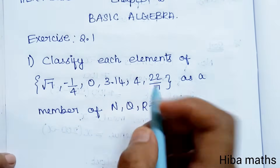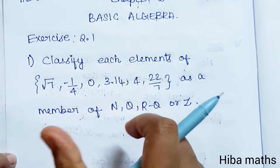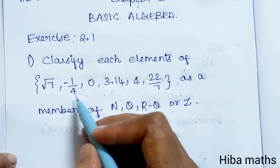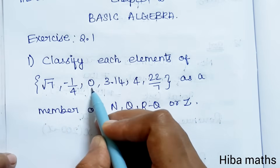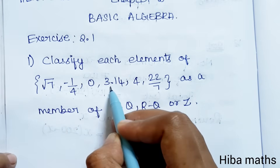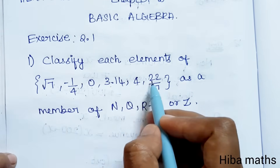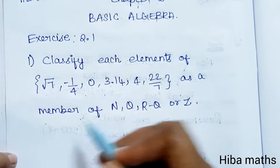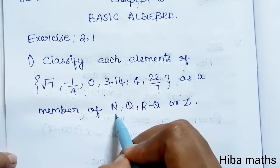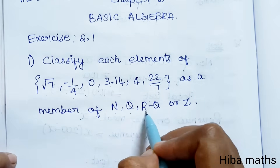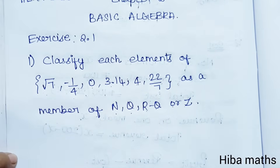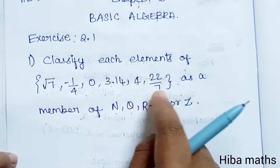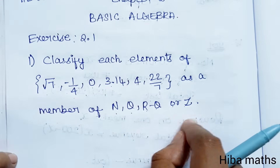Classify each element of: root 7, minus 1 by 4, 0, 3.14, 4, and 22 by 7 as a member of N, Q, R minus Q, or Z. Now we have to identify which category each number belongs to.